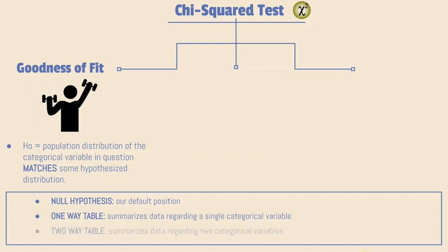A two-way table exists as well, which summarizes data regarding two categorical variables, with such tables made in two different ways leading to two more different types of Chi-square tests.